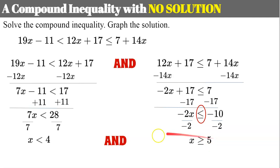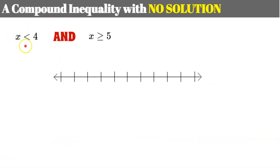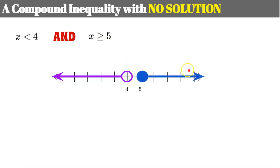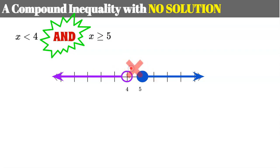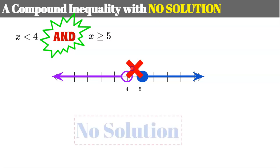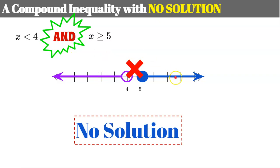Carrying over our solutions: x less than 4 and x greater than or equal to 5. Setting up the number line with 4 and 5, I graph an open circle on 4 shading left, and a closed circle on 5 shading right. This is an AND but there is no intersection — no common values between these two inequalities. There is no solution represented on the number line true for both inequalities, so the answer is no solution.